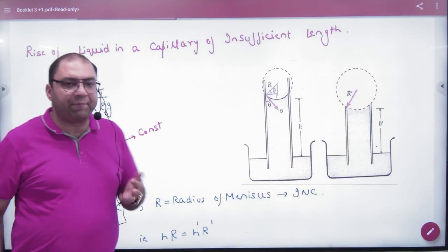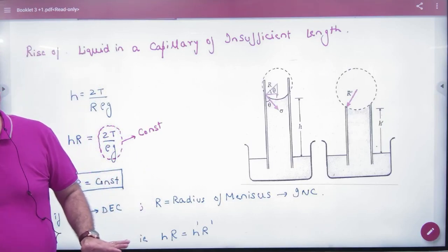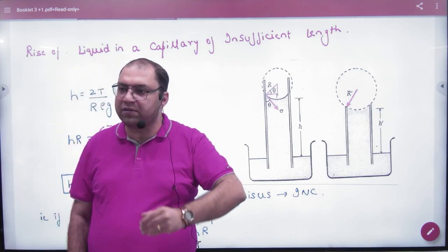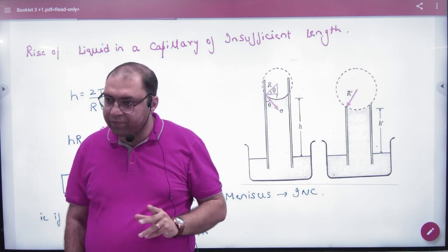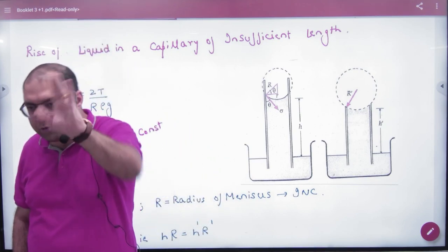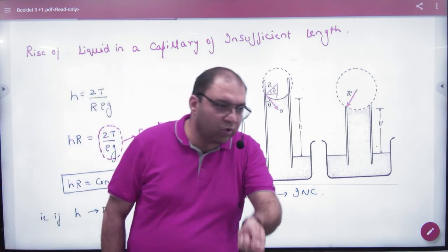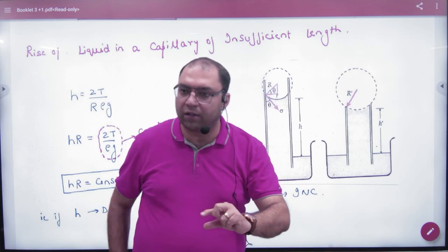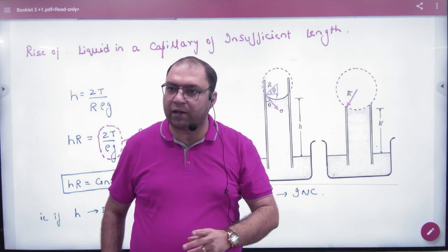The rise of liquid in a capillary tube of insufficient length. The capillary tube was rising, we had to rise up to 10 cm. You had to rise up to 15 cm. You had to rise up to 10 cm. You had to cut the tube. The length of the tube was 2 cm. You have to rise up to 10 cm. Now what will happen?